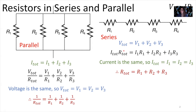Since V equals IR, we replace all voltages with I times R. So I_total times total resistance equals I1·R1 plus I2·R2, and so on. For resistors in series, the current is the same through all of them. So all those currents are equal, we can factor them out — they cancel on both sides — and we're left with total resistance equals the sum of all the individual resistances in series.